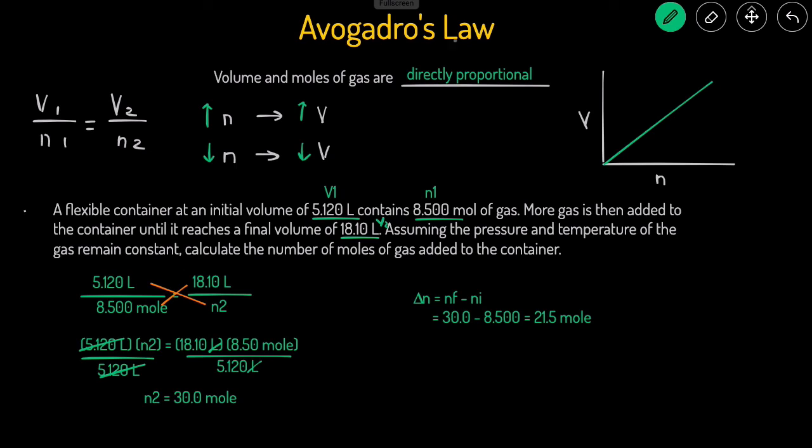So just to recap, Avogadro's law states that the volume and moles of gas are directly proportional. If you have more moles, then you have more volume. If you have fewer moles, there's going to be less volume. This is how the graph looks like. And this is the equation you use when the problems deal with changes in volume and changes in number of moles.